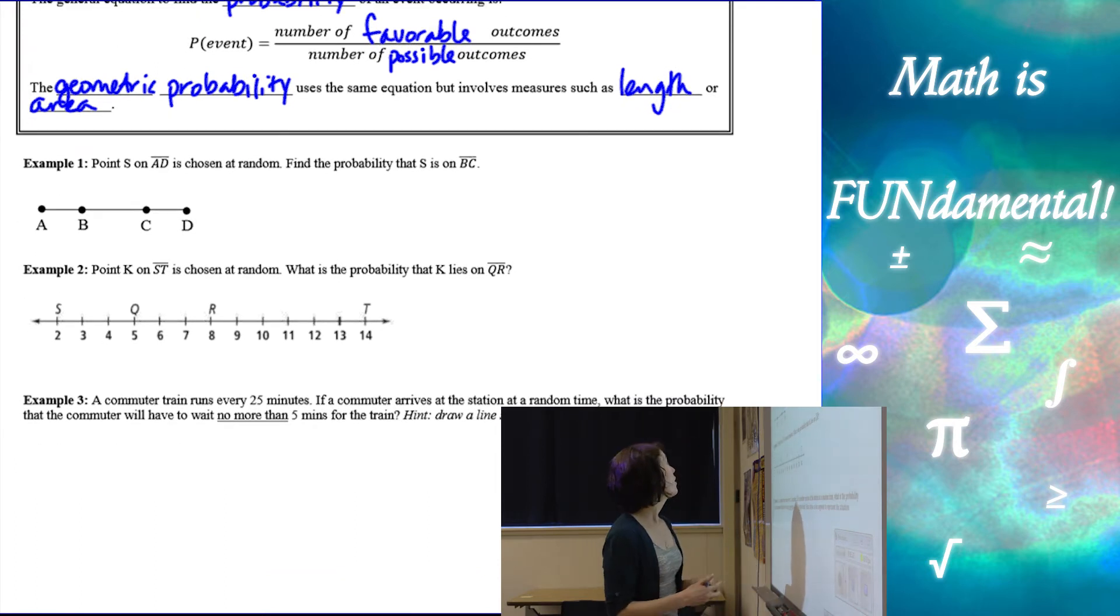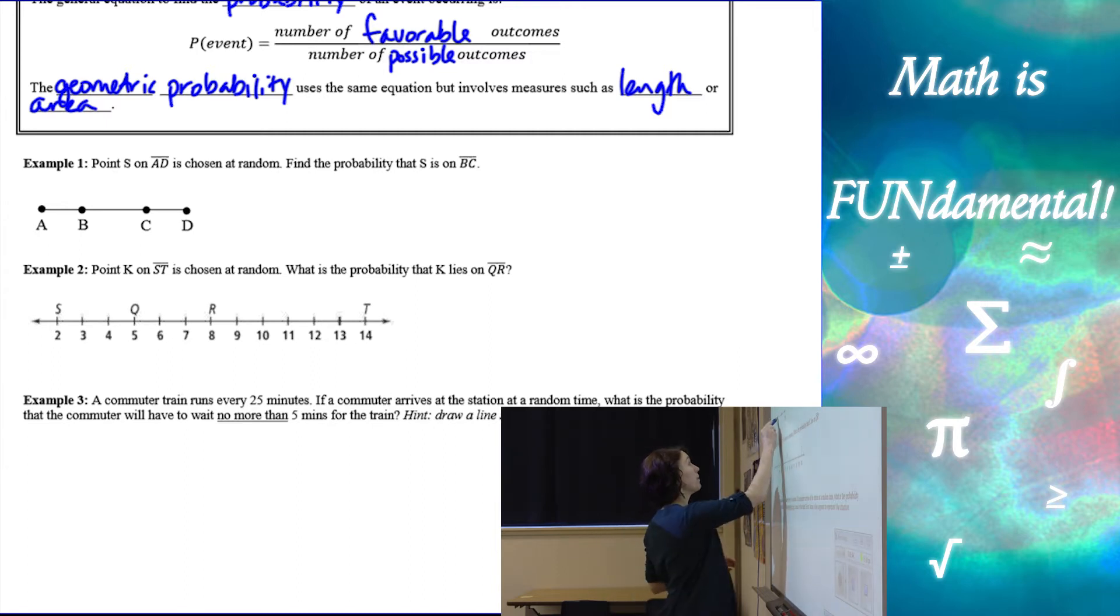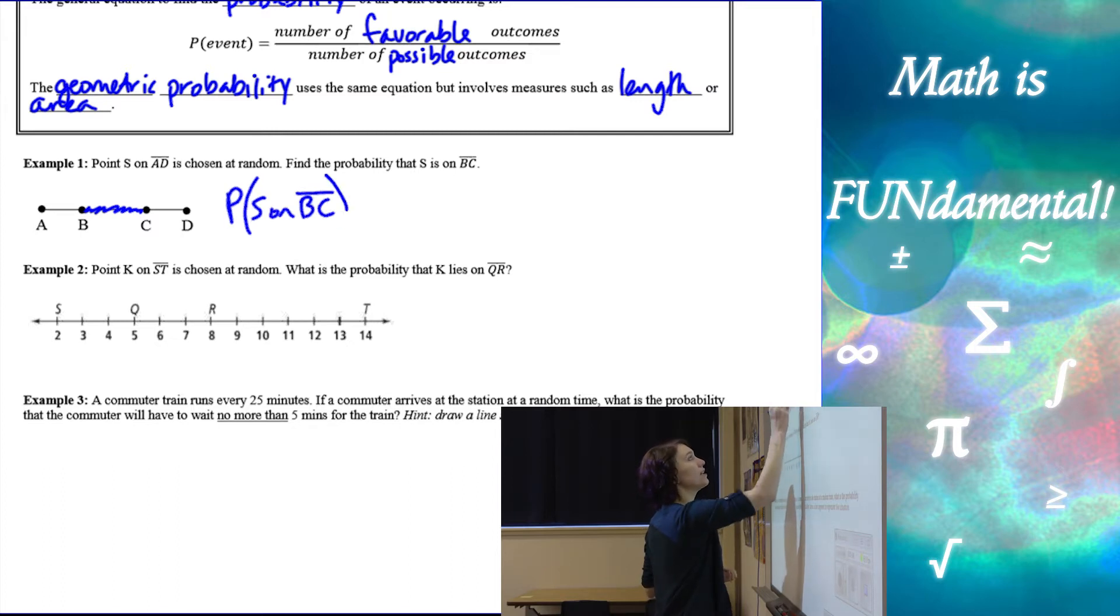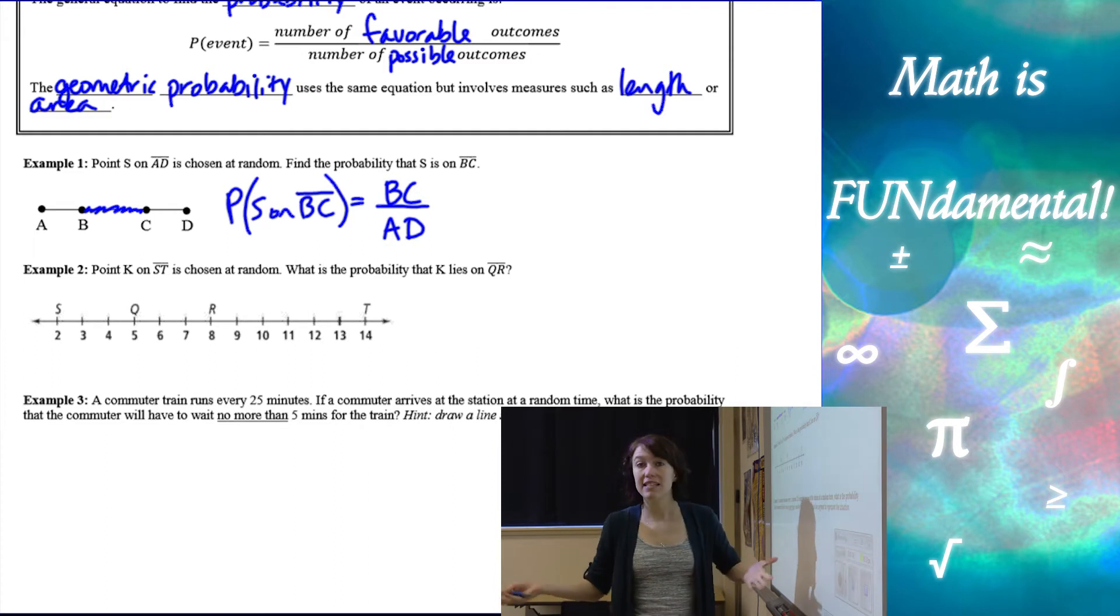Alright so let's look at some examples. Example 1 says point S lies on AD is chosen at random. Find the probability that S is on the segment BC. So we know that S is somewhere between A and D. We want the probability that S lies right in between BC. So now we don't have any numbers to go off of, we can't really assume the fraction of AD that BC is. So what we're going to do is we're just going to use a simple formula and come up with our answer. So the probability that S is on BC is going to be equal to the length of BC over the length, the total length, which is AD. So that's it. We don't have any numbers so that example is just as simple as that.